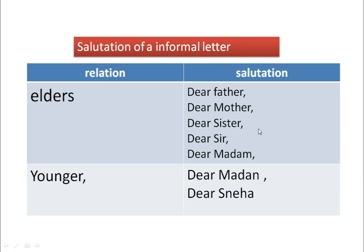When writing a letter to our elders, we should write the relation, not the name. But when writing to younger siblings, friends, or those of the same status or close to us, we write the name — for example, 'Dear Sneha' or 'My dear Sneha'. This indicates the person is junior, younger, of the same status, or a close friend.